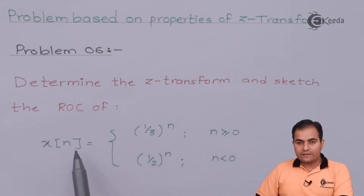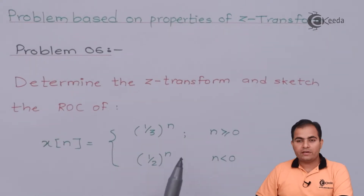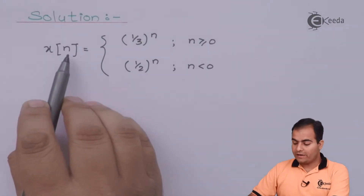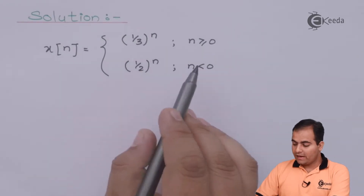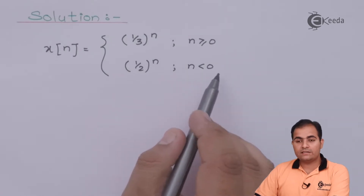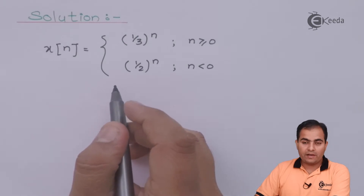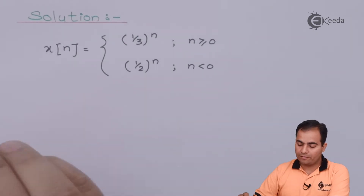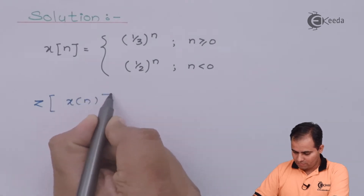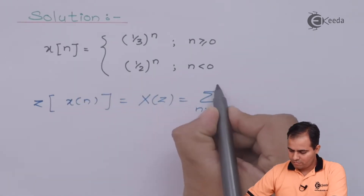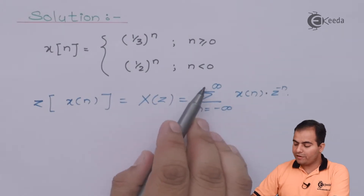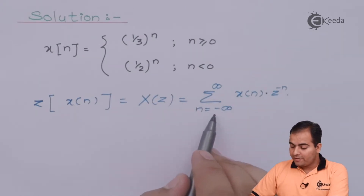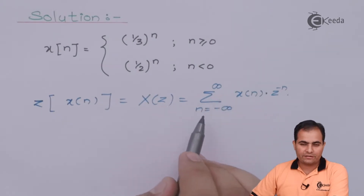X(n) is available on the right-hand side as well as the left-hand side, which means the ROC will be two-sided. X(n) goes from n = 0 to infinity with value (1/3)^n, and the next part is on the left-hand side where n < 0 with value (1/2)^n. We will apply the Z transform using its definition, which is the summation from n = minus infinity to infinity of X(n) · Z^(−n). This is the bilateral definition of Z transform.